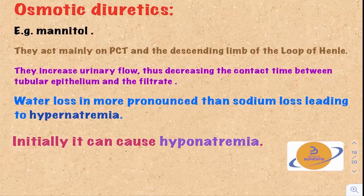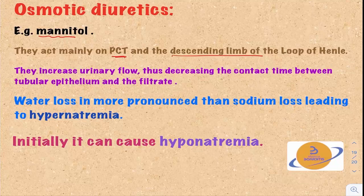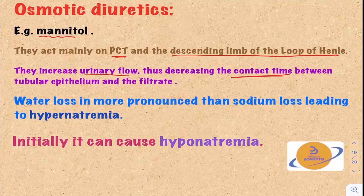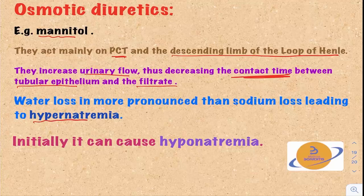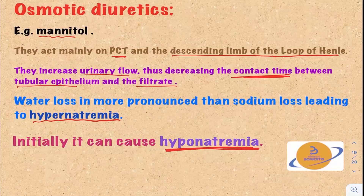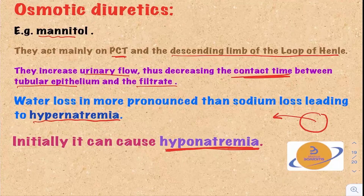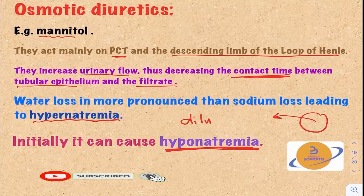The second class of diuretics are osmotic diuretics — the most famous example is mannitol. These act on the proximal convoluted tubule and the thin descending limb of the loop of Henle, because these two segments are permeable to water. They increase urinary flow by decreasing contact time between the tubular epithelium and the filtrate, producing the diuretic effect. The water loss is more pronounced than sodium loss, which can lead to hyponatremia. Initially, mannitol can cause dilutional hyponatremia because it draws water from the intracellular into the extracellular compartment.